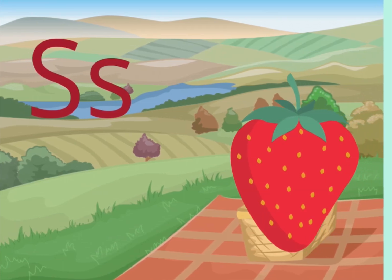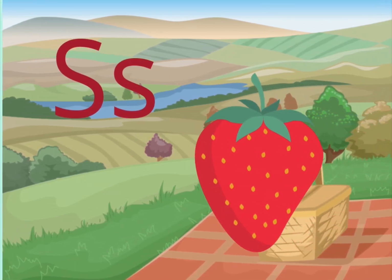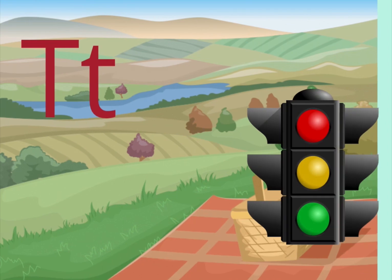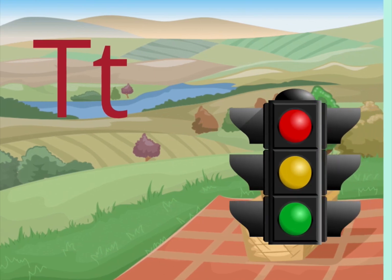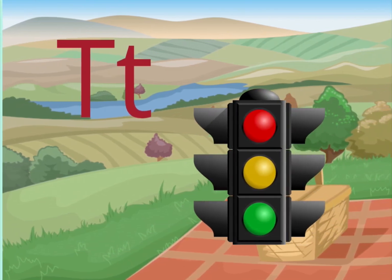S is for strawberry. T is for traffic light.